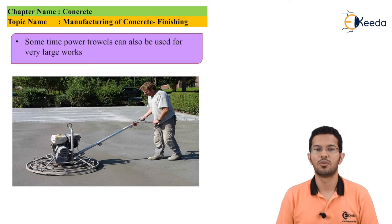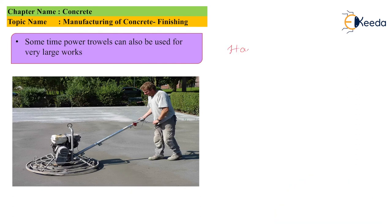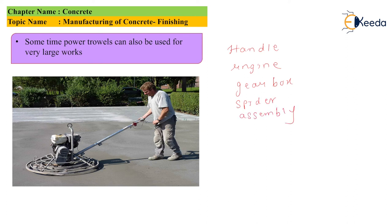There are six general components that make up a typical walk-behind trowel: the first is the handle, the second is the engine, the third is the gearbox, the fourth is the spider assembly, the fifth is the trowel blades, and the last one is the safety ring.